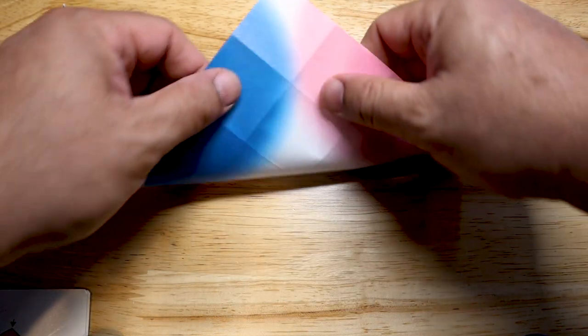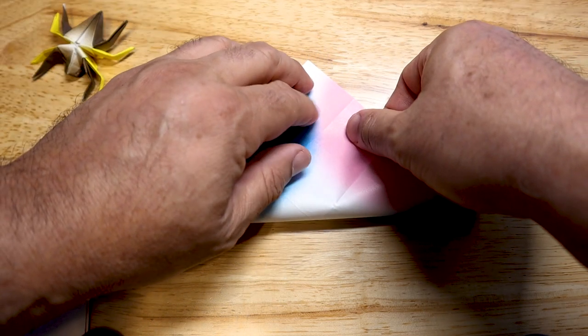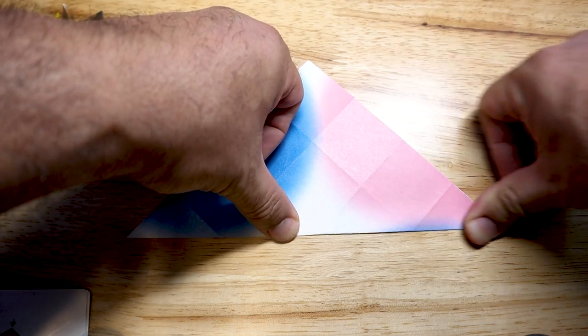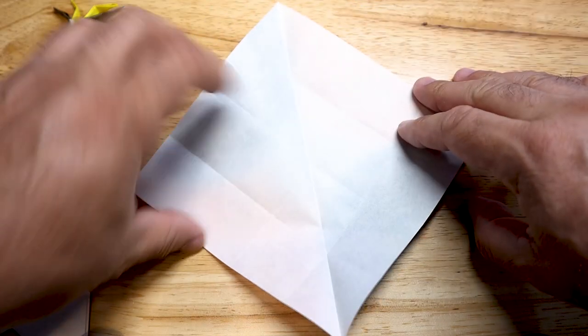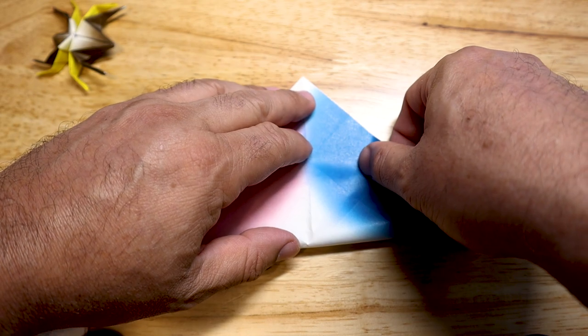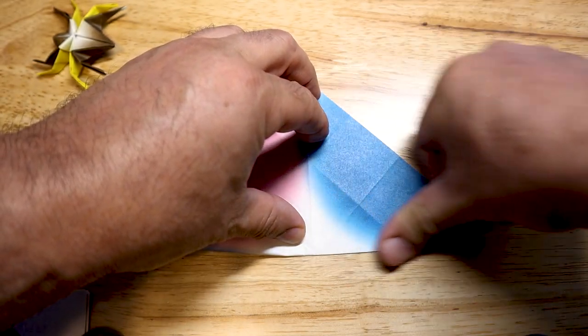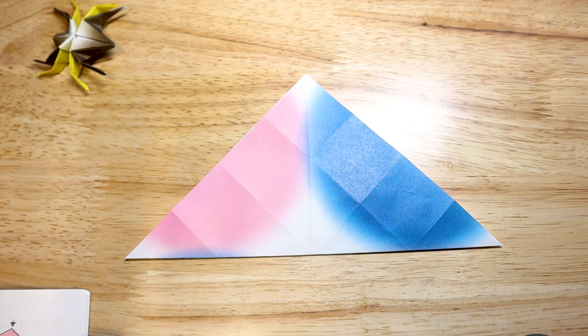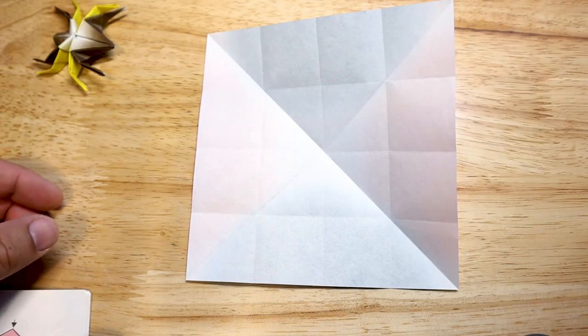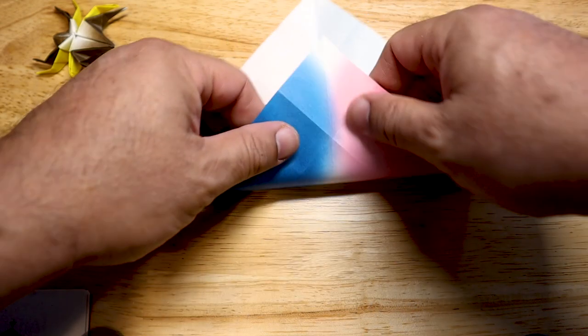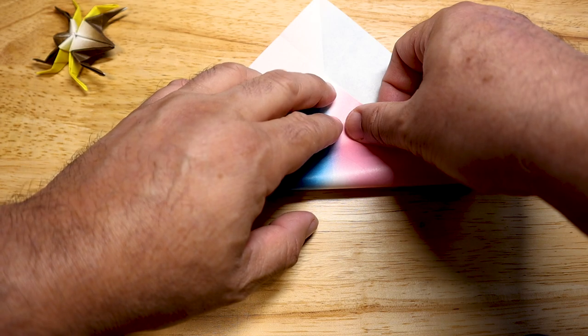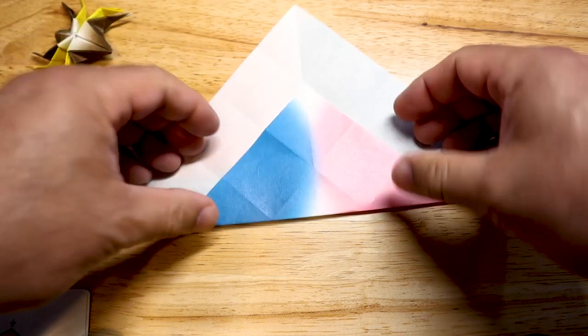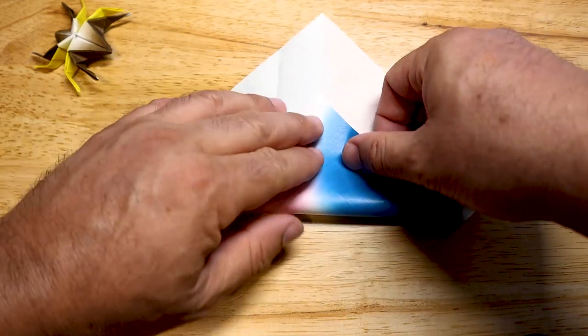Now we're going to fold our paper diagonally, making sure that we match the corners evenly, pressing down with our thumbs to flatten our edges. And then we're going to repeat this for the other corner. So in the center of your paper, you should now have a square. And we're going to use that as a guide to fold our paper over to the corner of that middle square. And we're going to turn our paper and we're going to repeat this step for all four corners.